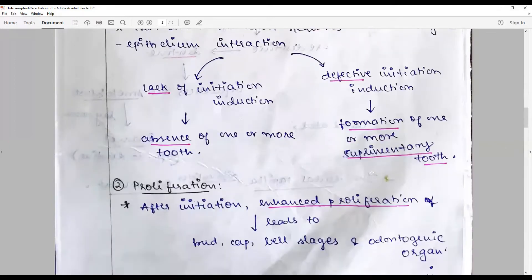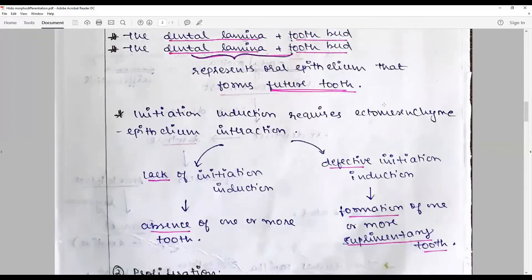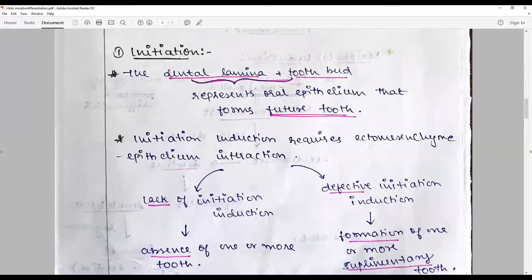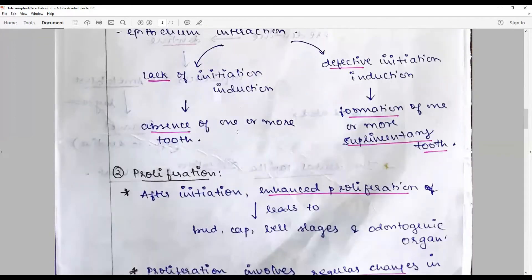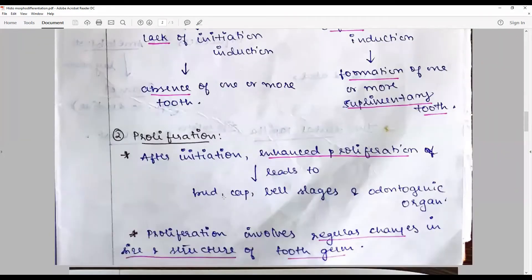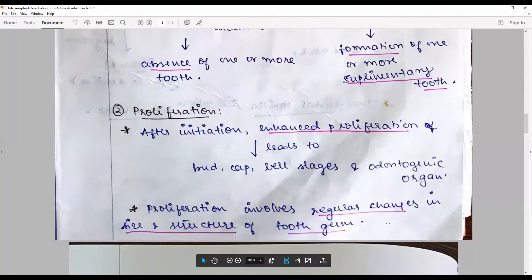The stage of proliferation. After initiation, there is proliferation. Initiation happens with the bud stage, whereas proliferation includes bud, cap, bell, and odontogenic organ formation. This involves regular changes in size and partially in structure of tooth sums.